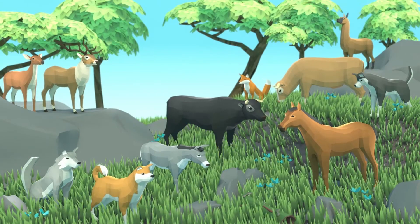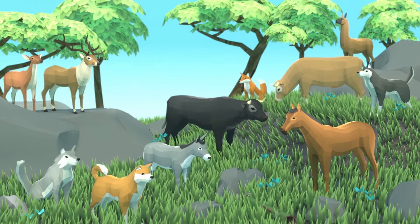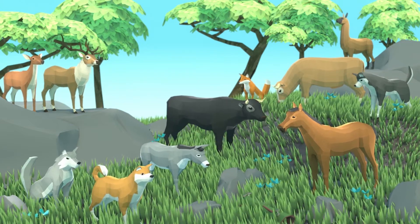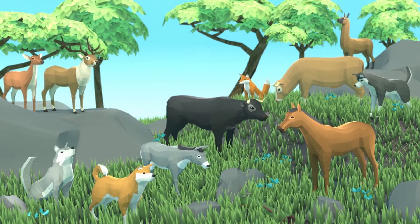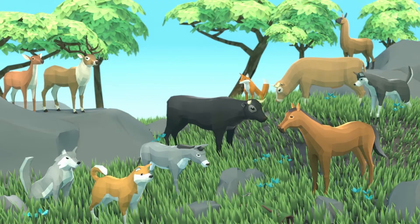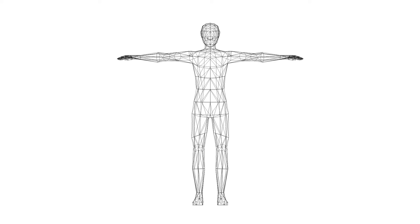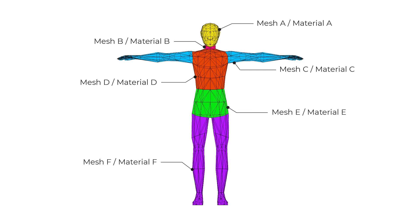It depends on its complexity, but the majority of the time when you download a 3D model you'll find that the mesh is not created as a single unit but rather as a composition of submeshes, with each one having its own properties — material included. For instance, if you download a model of a human character, most likely the mesh is composed of a head mesh, a pair of hands and legs, each with their own material and properties. That leads us to the main topic of this tutorial.